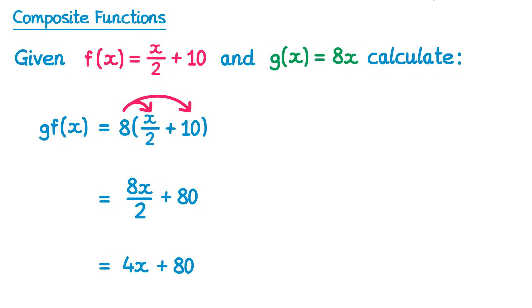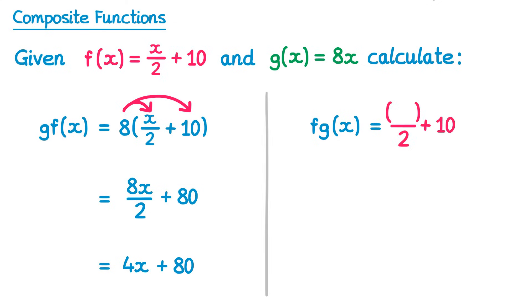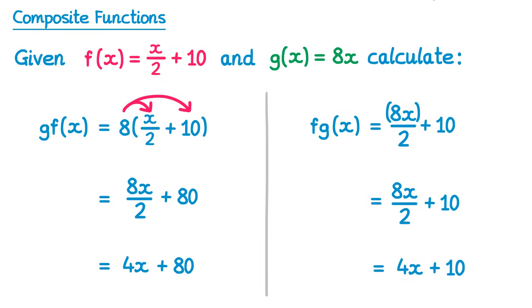Let's try the other way around again, so we'll do fg of x. We write out the f function first but change the x's to brackets — so it's x over 2 plus 10, so it's bracket over 2 plus 10. Then inside that bracket, we write the whole g function, so 8x. This one can simplify quite easily: we don't need the brackets on top, and 8x divided by 2 is 4x, so it's 4x plus 10.